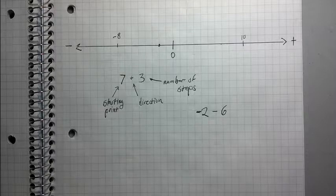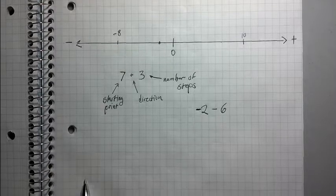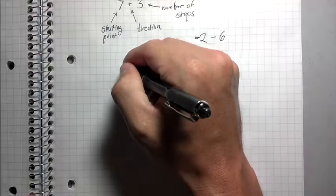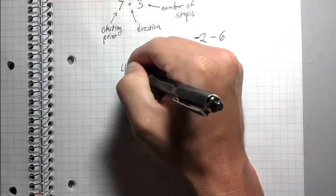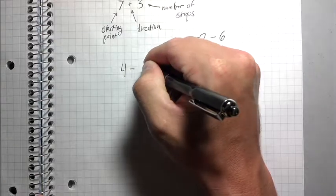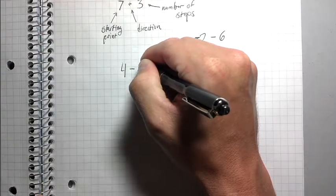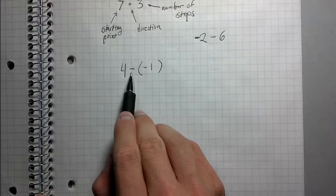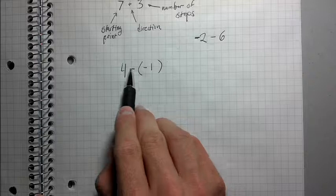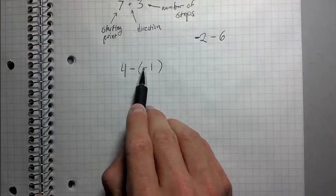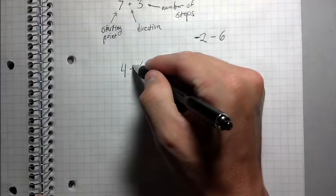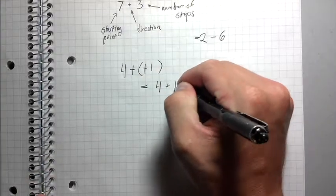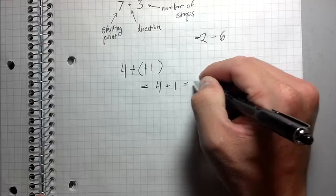Now, there's one final point that I want to make about this. And that is, what happens if you have a situation where you have two signs that are right next to each other? So let me just give an example of that kind of scenario. So what if I had 4 minus a negative 1? If I have a minus and a minus that are next to each other, these two minuses are going to cancel out, and they're going to make a positive. So I'm going to rewrite this as 4 plus 1, so it's equal to 5.